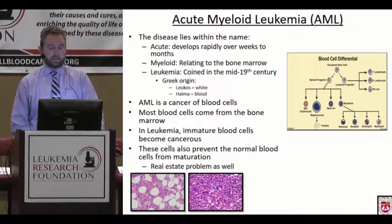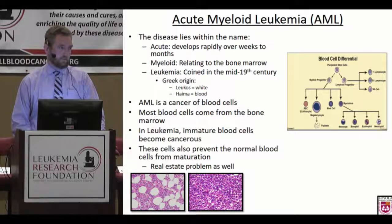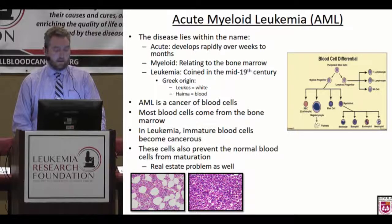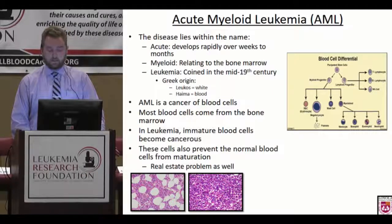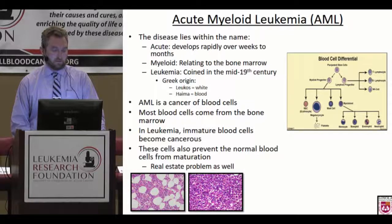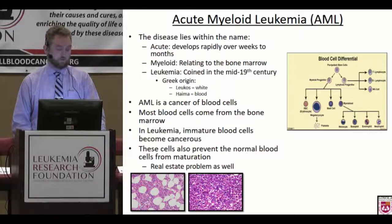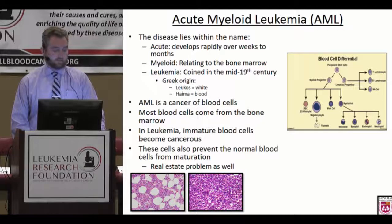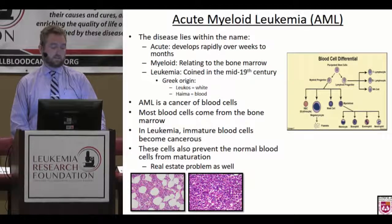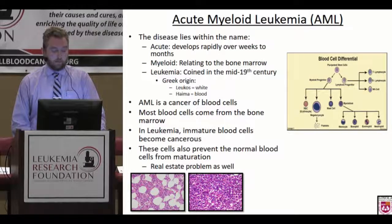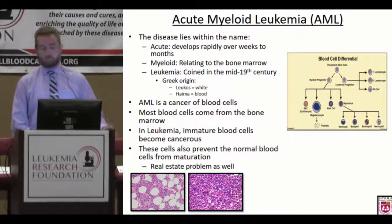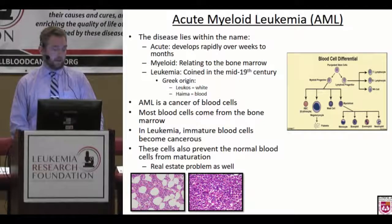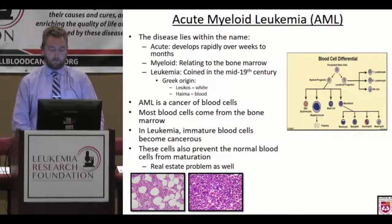The disease lies in the name. It's an acute process — something that develops rapidly over the time course of weeks to months. It relates to the myeloid cells, which is the term that refers to the bone marrow itself, and leukemia is a word coined a couple centuries ago of Greek origin which basically means white blood. So this is an acute cancer of the white blood cells from the bone marrow, involving immature blood cells where mutations make them cancerous.